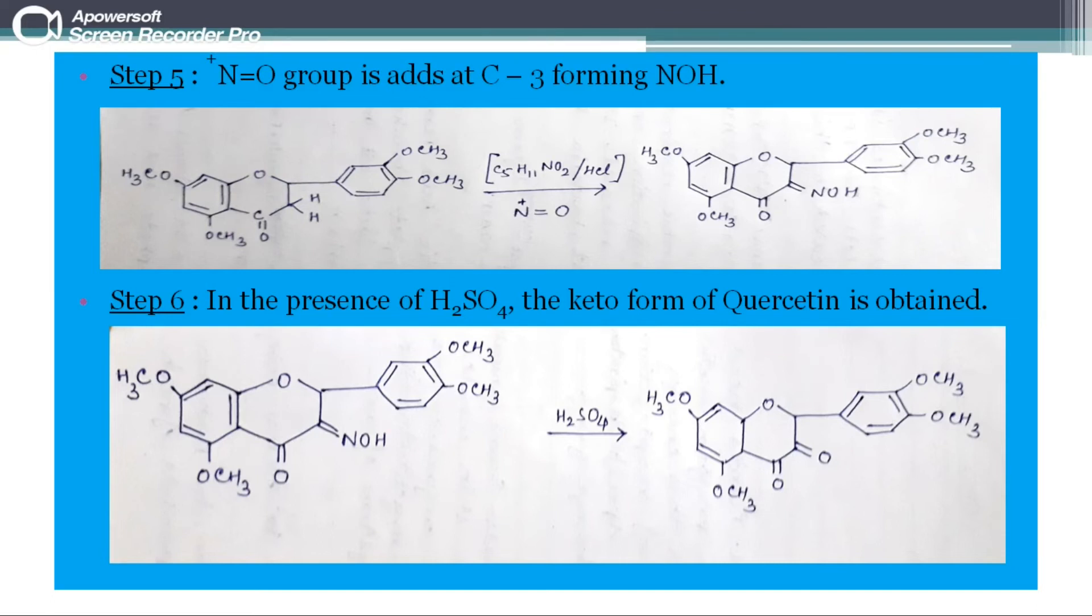In the next step, in the presence of sulfuric acid, the keto form of quercetin is obtained.